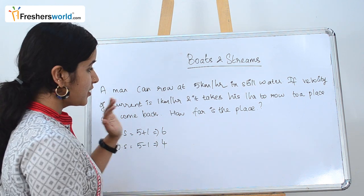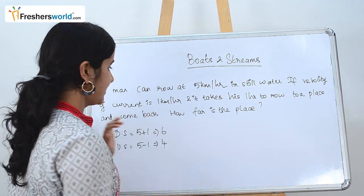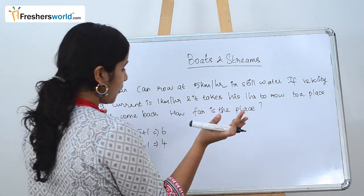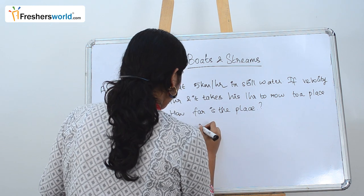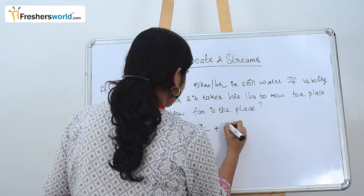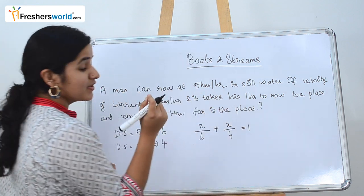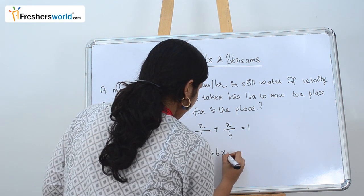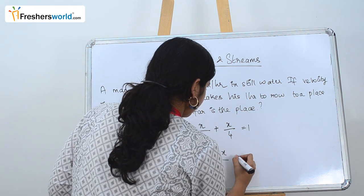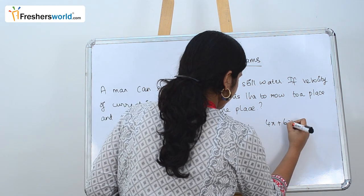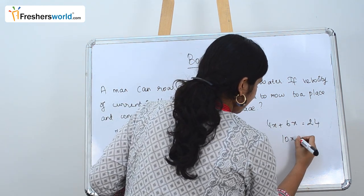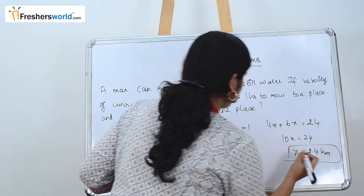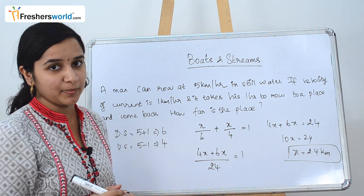They are asking us to find the distance. It takes 1 hour total to row to a place and come back, covering both upstream and downstream. So: x by 6 plus x by 4 equals 1. Solving: (4x plus 6x) divided by 24 equals 1, so 10x equals 24, giving x equals 2.4 kilometers. The distance of the place is 2.4 kilometers.